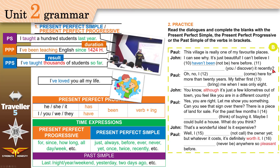'Have you discovered it recently?' — recently, Present Perfect Simple. 'Oh no, I have been coming here for more than 20 years' — started 20 years ago and still happening: PPP. 'My father first brought me when I was only eight' — this is the first time it happened. With 'when,' use past simple, and we have a specific time: 'I was only eight.'